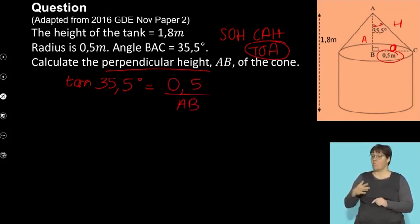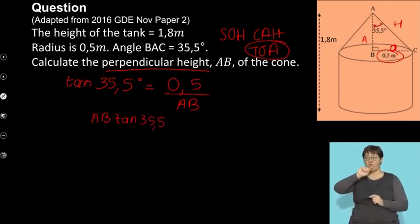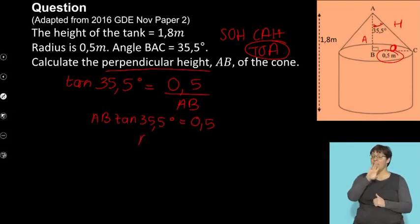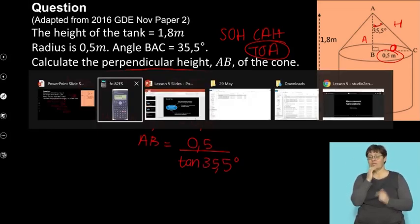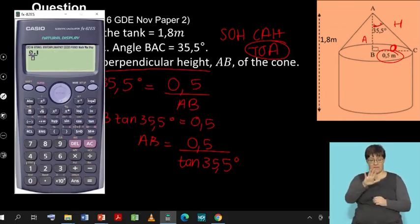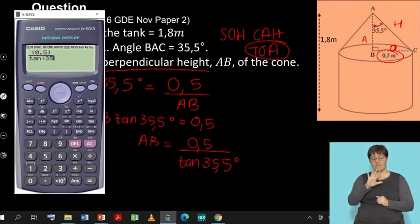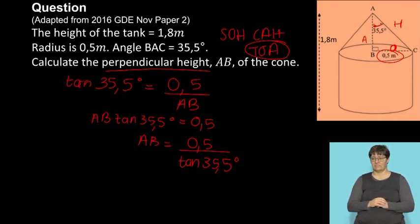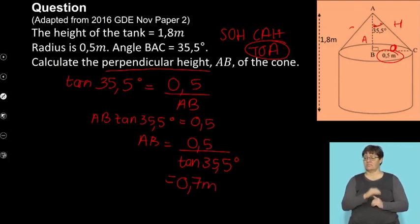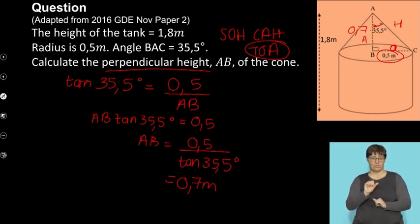I want to isolate AB, so I multiply both sides by AB: AB × tan 35.5 degrees = 0.5. Then I divide both sides by tan 35.5 degrees, giving AB = 0.5 ÷ tan 35.5 degrees. Using my calculator: 0.5 ÷ tan(35.5°). Rounding to the second decimal place, the perpendicular height is 0.7 meters.